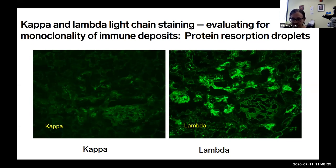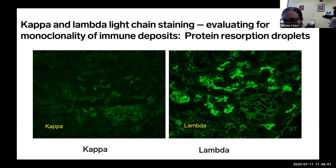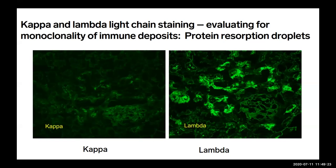You also evaluate for monoclonality in other renal compartments — tubular basement membrane, Bowman's capsule, and glomerular capillary loop staining for kappa but not lambda is a case of light chain deposition disease. There is a question about subjectivity: we use intratubular casts as an internal control, considering them 3-plus staining. We dial down the intensity so the brightest thing in the field is the intratubular cast, serving as an internal reference. We also use albumin stain as our negative control, highlighting tubular basement membranes and glomeruli.